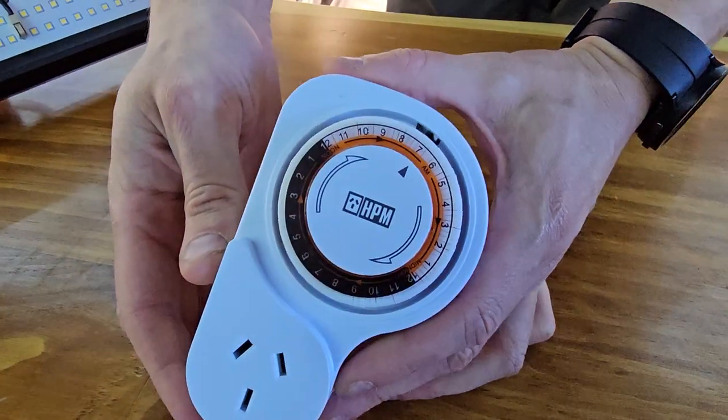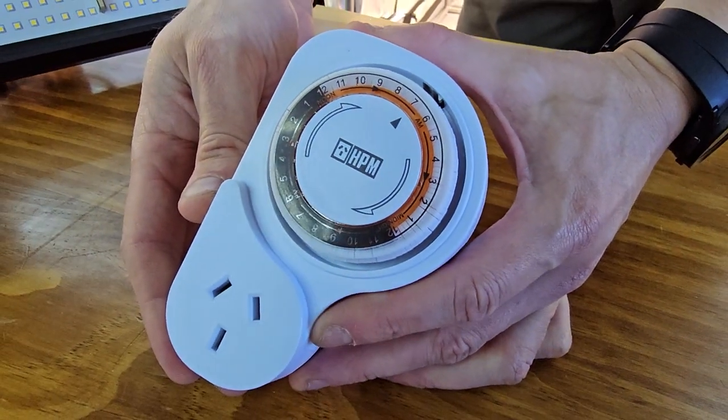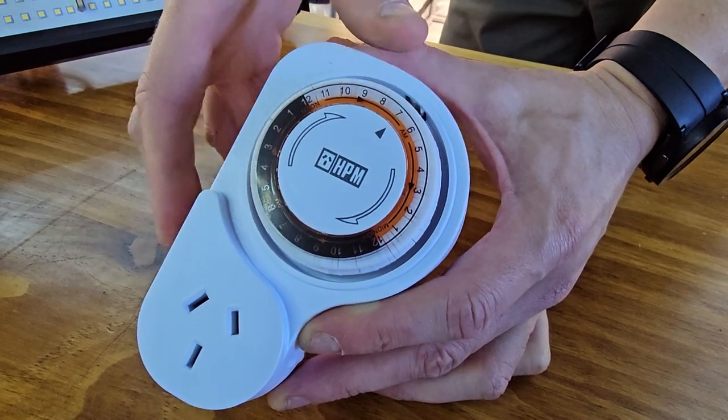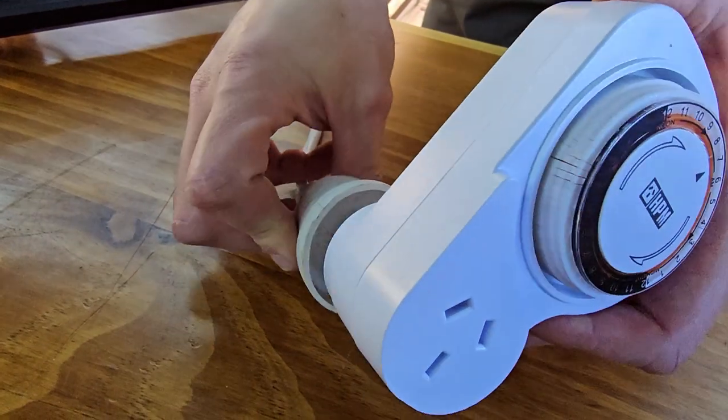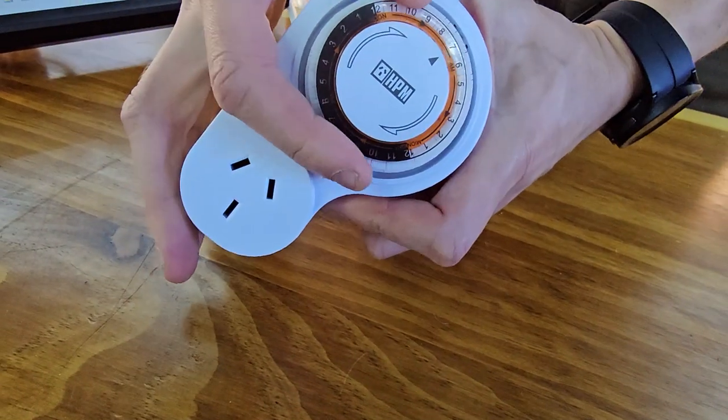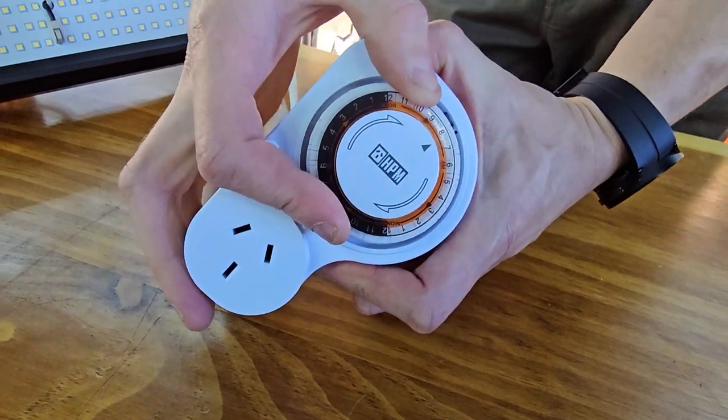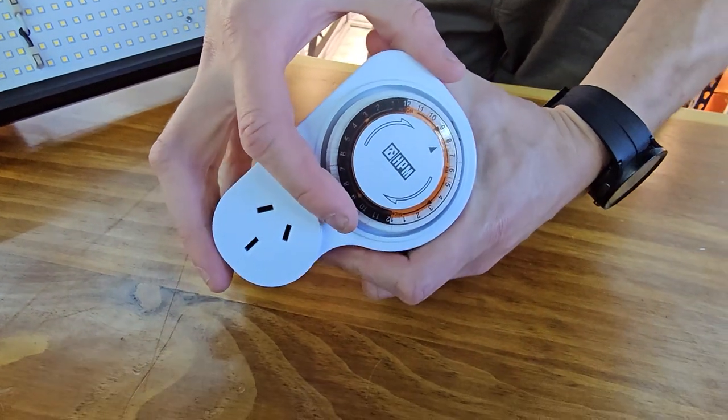But anywho, beyond that, we're going to show you how to set this up. So what we've got here is we've got a little arrow. First things first, when you plug this into power, which I'm going to do just now, this dial will start to rotate very slowly to the time of the day.